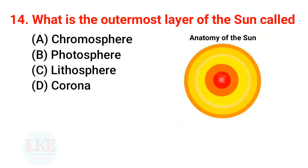Question number 14: what is the outermost layer of the sun called? Right answer, option D: Corona.